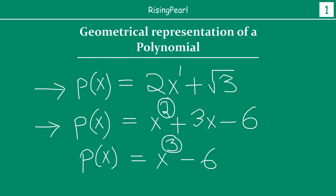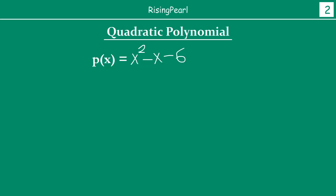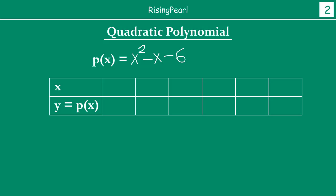We are going to find out how we can draw a quadratic polynomial graphically. Here I have written the quadratic polynomial x squared minus x minus 6. You could write any quadratic polynomial of your choice, but I picked this one. To draw it on a graph paper, we need some coordinates. We have created a table with two rows: the top row for x values, and the second row for the value of the polynomial, which we call y.